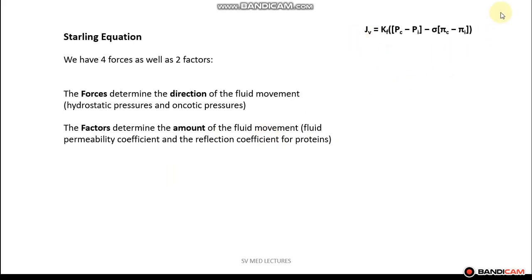Now let's take a look at the Starling equation. We have four forces as well as two factors. The forces determine the direction of fluid movement — they are the two hydrostatic pressures as well as the two oncotic pressures. The factors determine the amount of fluid movement — they are the two coefficients: the fluid permeability coefficient and the reflection coefficient for proteins.